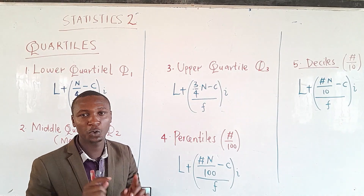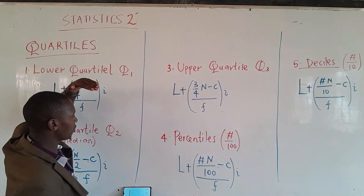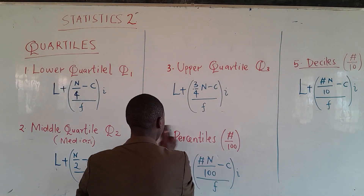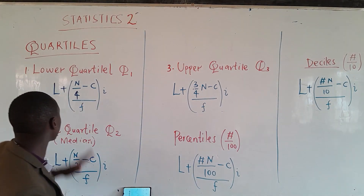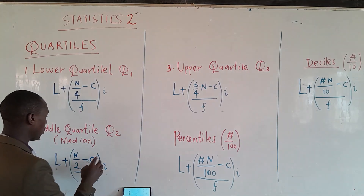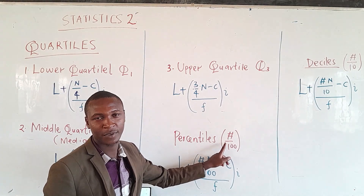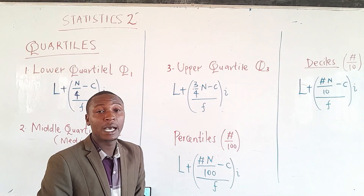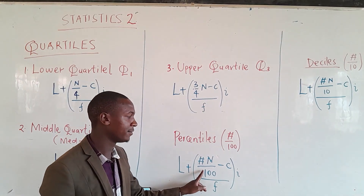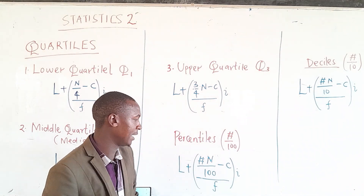Apart from quartiles, we can also talk about what we call percentiles. For quartiles we compare data using fractions of one. We can also compare the same data using percentages, where the maximum is 100% and the minimum is 0%. We modify the median formula accordingly for percentiles.